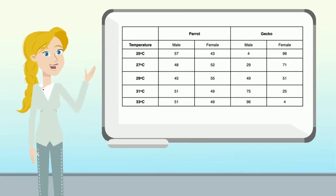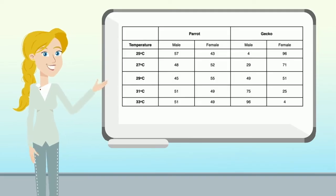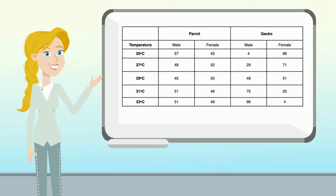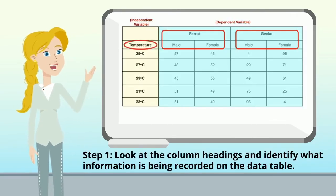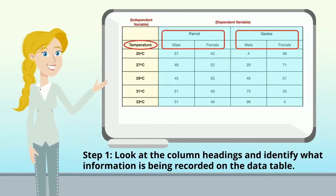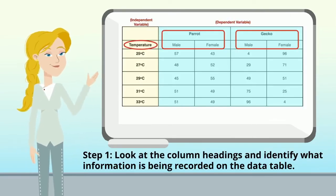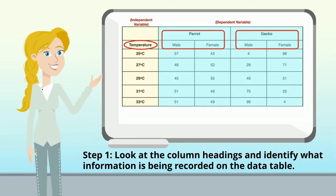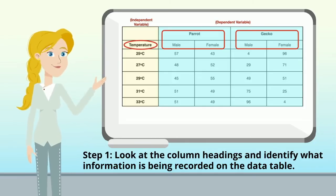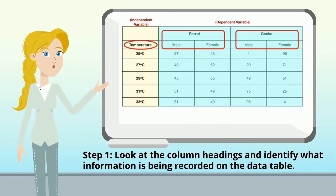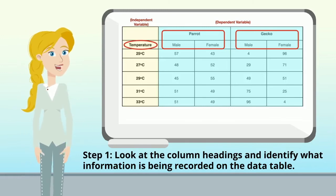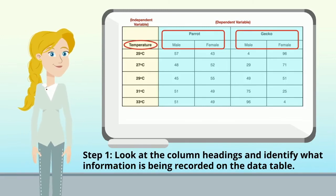Let's look at this data table. In step one, we want to look at the column headings and identify what information is being recorded. In column one we have temperature — that's the independent variable — and the other columns have parrot and gecko, male and female.